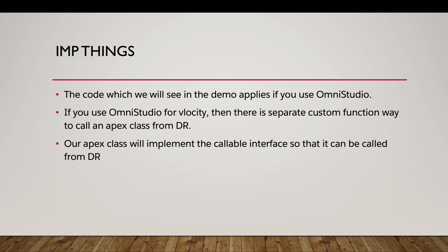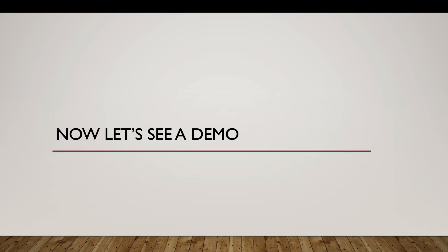The demo I'm going to show in this video and the code we'll use only applies if you use OmniStudio. If you use OmniStudio for Velocity, which was the old version, there is a separate way to create a custom function and then call it from DataRaptor to invoke an Apex class. We are going to use the latest way — our Apex class will implement the Callable interface so that it can be called from the DataRaptor.